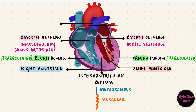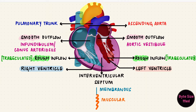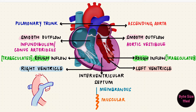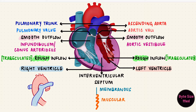They lead into the pulmonary trunk on the right and the aorta on the left. These two vessels don't emerge straight out — they wind around each other. At the entrance to these vessels are the semilunar valves: the pulmonary valve on the right and the aortic valve on the left.